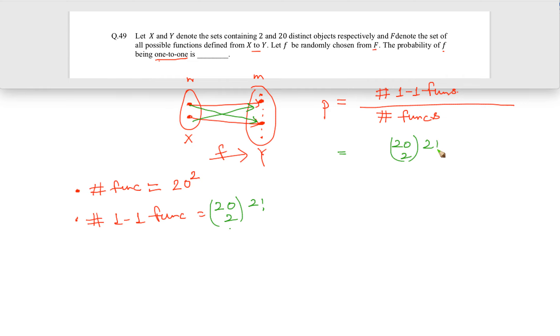Total number of one-to-one functions is going to be 20 choose 2, which is 20 into 19 by 2 factorial, into 2 factorial, divided by 20 square. So essentially this is 19 by 20, which is basically 95 by 100, which means 0.95.